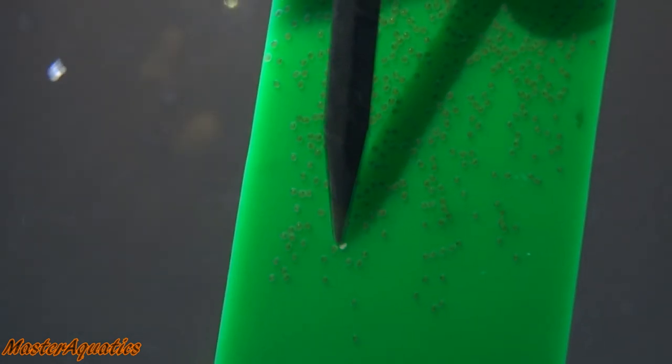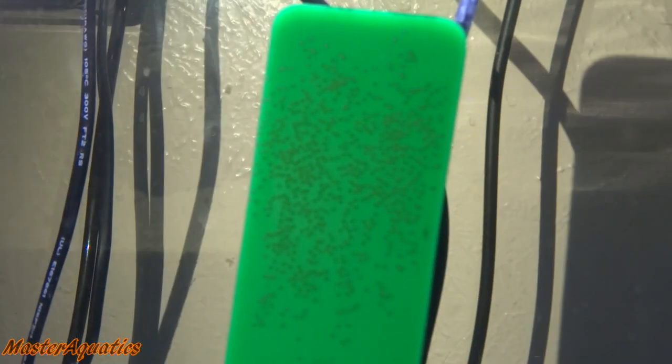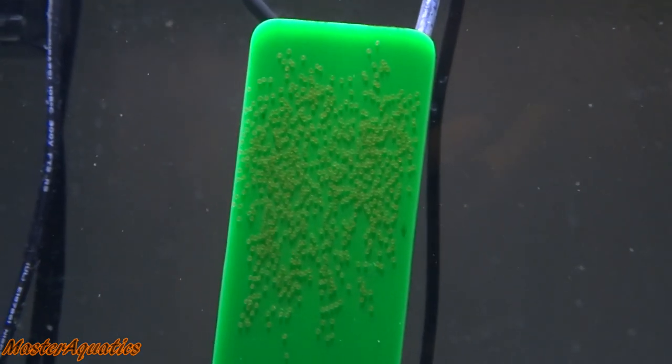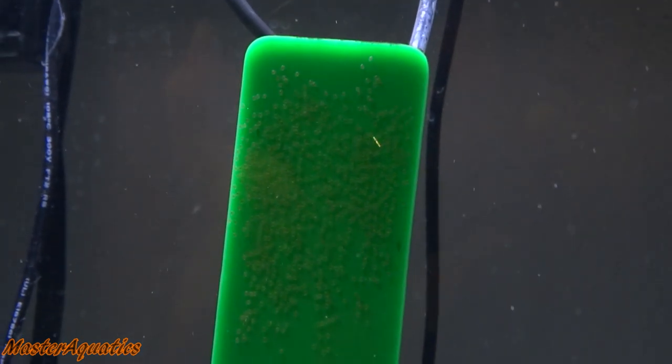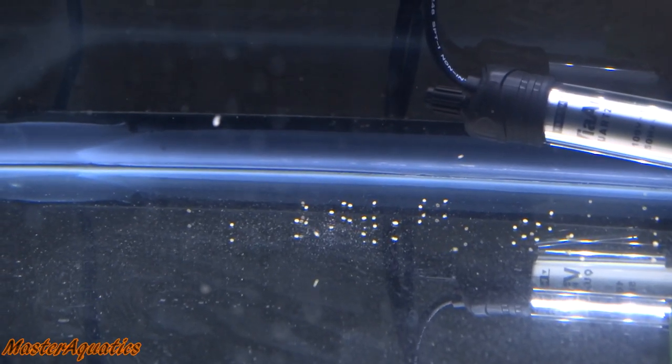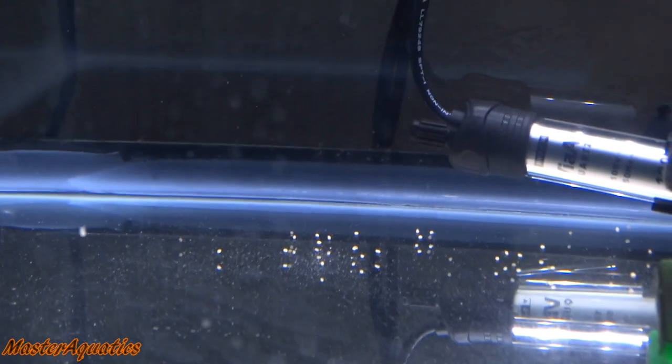Now if you have two angelfish, like a pair, and the eggs are white all the time, like every time they lay eggs, the eggs always turn white, you have two females. That might be hard to comprehend, but sometimes two female angelfish will pair up and they will lay eggs together. And all of the eggs will turn white because there's no male to fertilize the eggs with sperm.